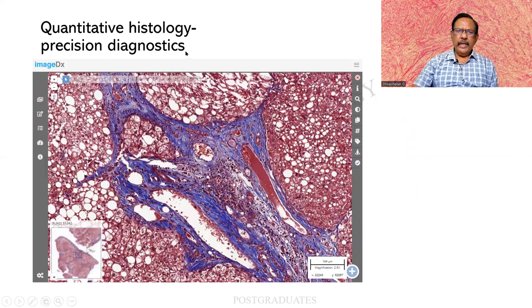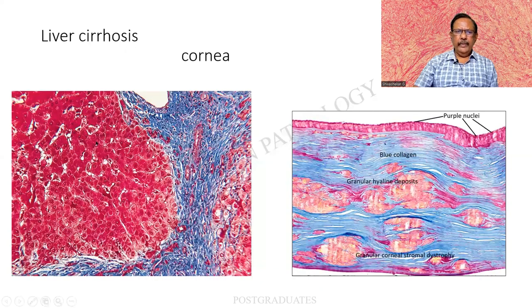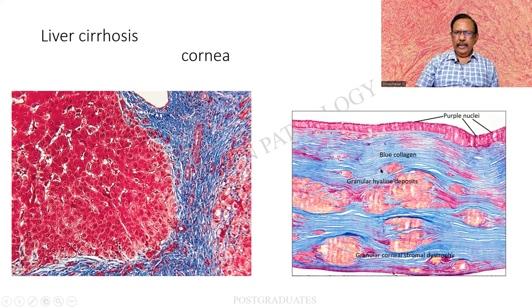This is a picture of liver cirrhosis — I am finding a fatty change, effacement of architecture, and an in-growth of connective tissue producing pseudolobulation. Seeing Masson's Trichrome in action: the parenchyma takes up a red color but I am more interested in the connective tissue, particularly in the early stage of cirrhosis where this stain is most useful. This next image is a cornea, with the stroma taking up a blue color, some granular hyaline deposit, and a purple-color nucleus stained by Weigert's haematoxylin.